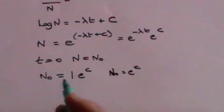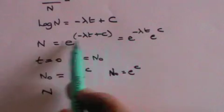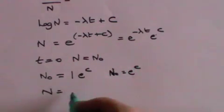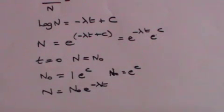And now we can write that N, from this formula here, N equals e to the c, which is N₀, times e to the minus lambda t.